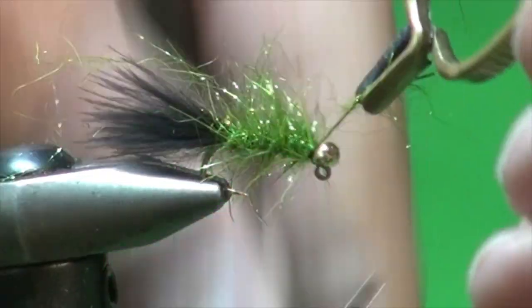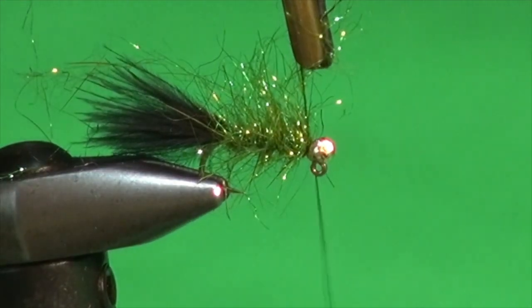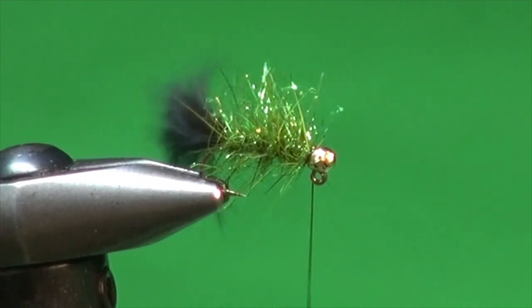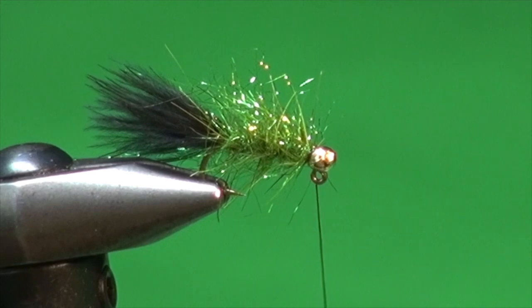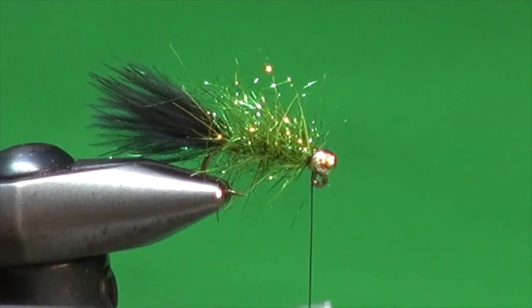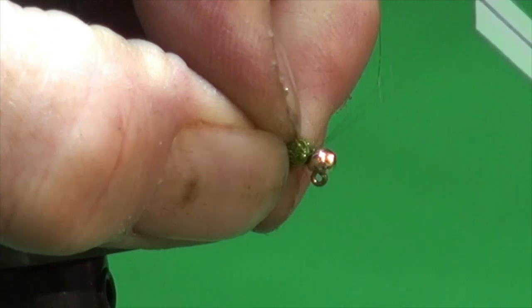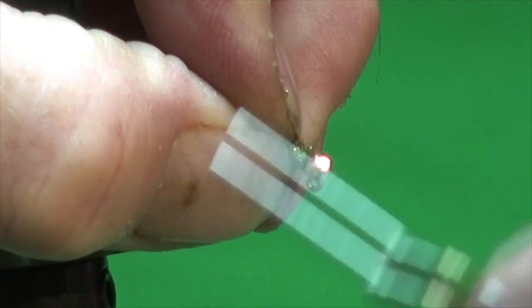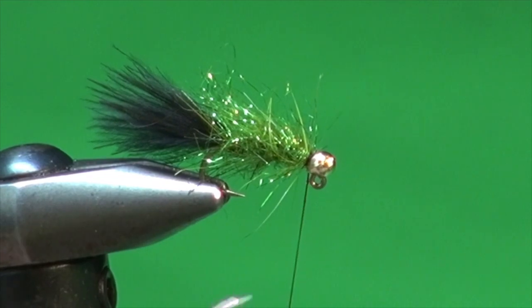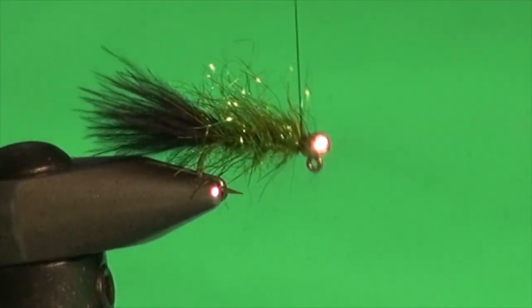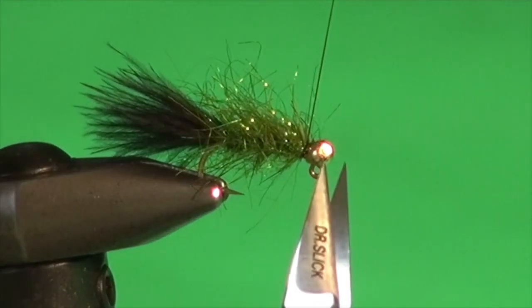And then a couple of wraps over the top. A couple of wraps in front. Swim away the excess. Pull away some of those fibers. Clean that area up. And take some super glue. Coat that thread. Sweep those fibers back. Get that coated thread right in that tie-off area right behind the bead. And then a three to five turn whip finish. Close it off. Trim away the excess thread.